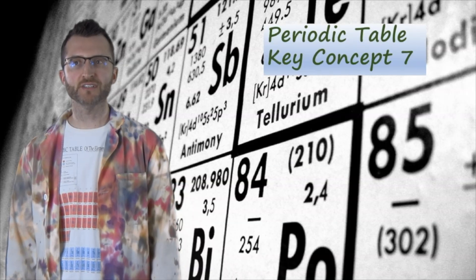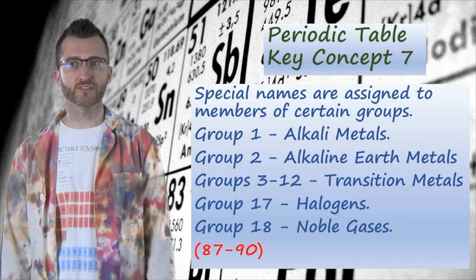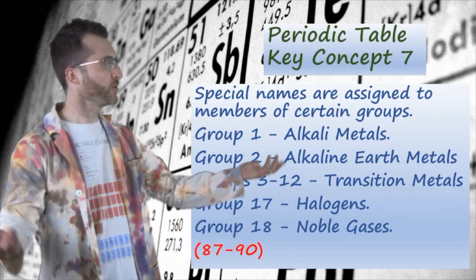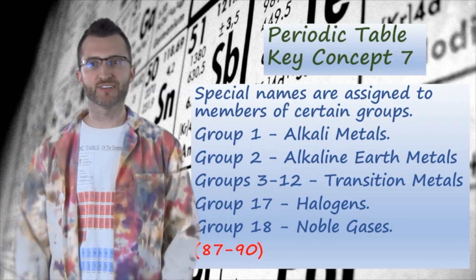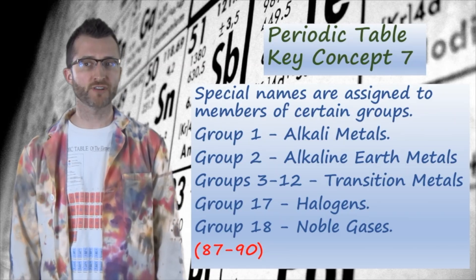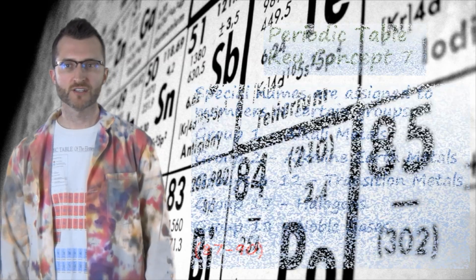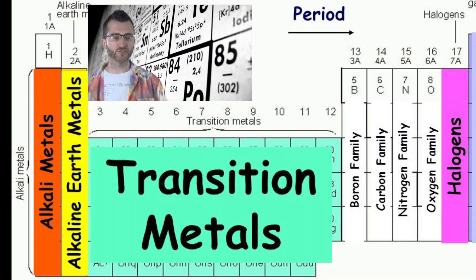Periodic Table Key Concept 7. Special names are assigned to members of certain groups. Group 1, alkaline metals. Thanks for spoiling that one on the last slide. Group 2, alkaline earth metals. Groups 3 through 12, transition metals. Group 17, halogens. Group 18, noble gases. So let's start over to the left on our Periodic Table. Groups 1 and 2,